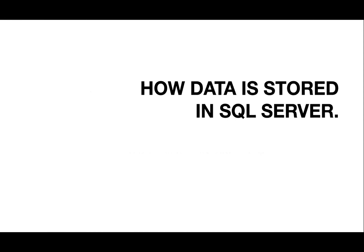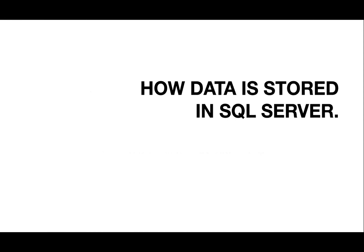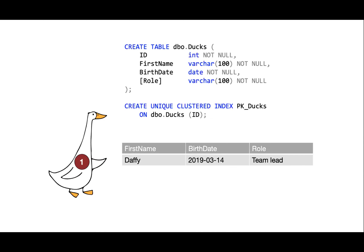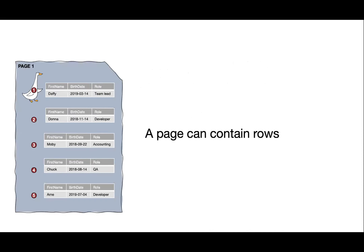I want to whet your appetite into the concept of ordering rows, how that affects your query plans, and how you can use that to your advantage to make your queries go much faster. So basics: how data is stored in SQL Server. Let's say we have a table we call TableDucks, we have an int column and identity for the purpose of this demonstration, and we put a unique clustered index on that integer column. Let's populate this table with a duck — meet Daffy, he is the team lead, born on March 14th, and he is number one.